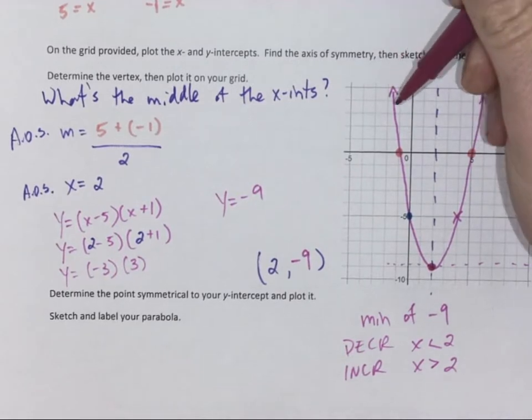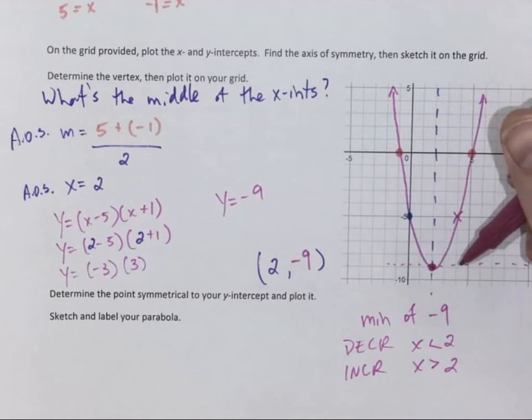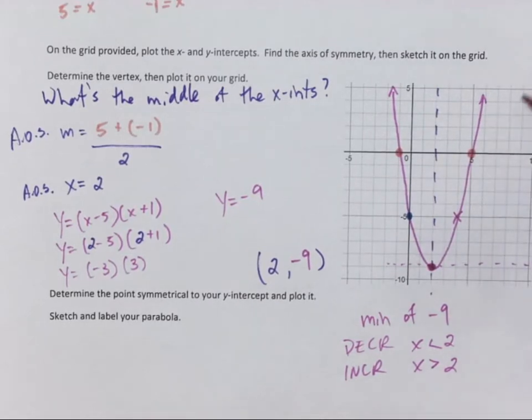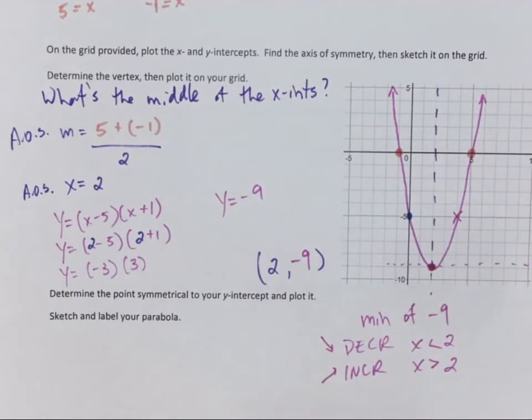And then it is increasing when x is greater than 2. So the slope, the instantaneous slope at any point, is negative. When x is 2, the slope is 0. And then the slope is increasing, or a positive slope. So I've used my x-intercepts.